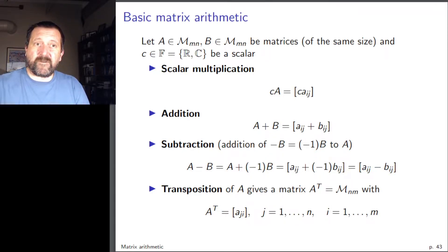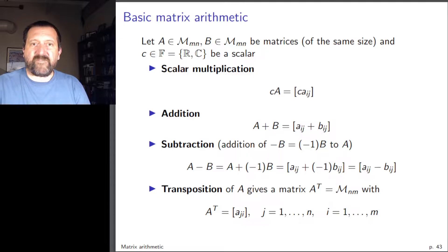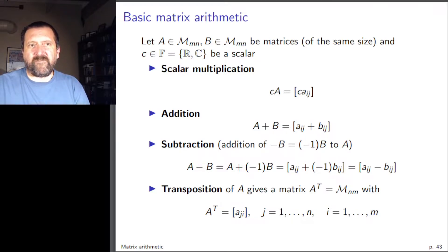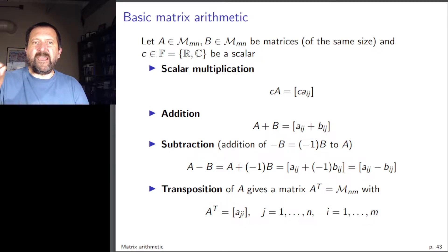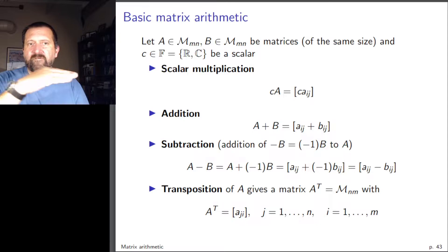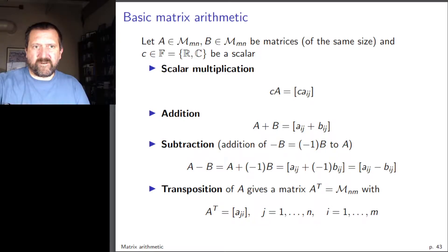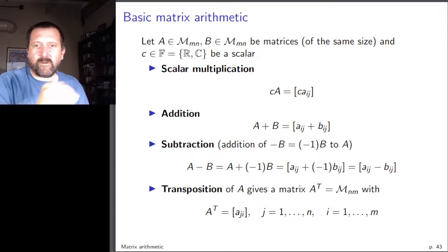Transposition is another important operation. If A is of size m×n, the transpose A^T is of size n×m — we flip rows and columns — where the entries of A^T are a_{ji}. What are rows in A become columns in A^T.